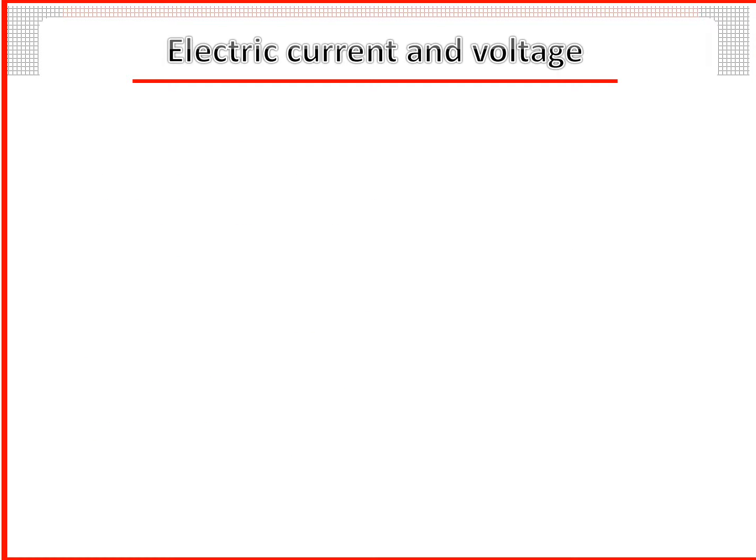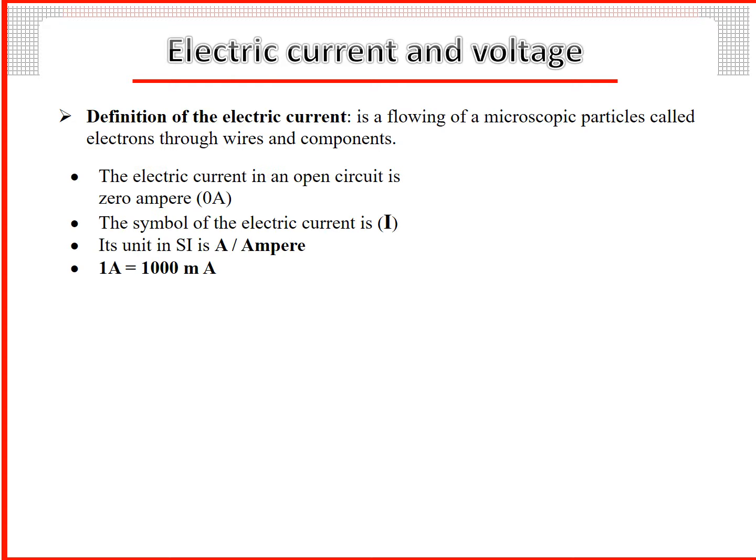Electric current and voltage. Definition of electric current: a flowing of microscopic particles called electrons through wires and components. The electric current in an open circuit is zero ampere. The symbol of electric current is I. Its unit in SI is A (ampere). 1A = 1000 mA.